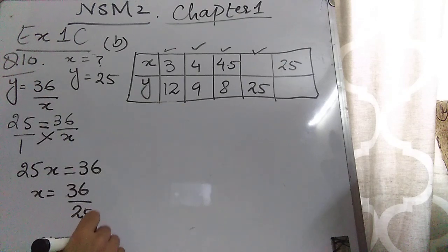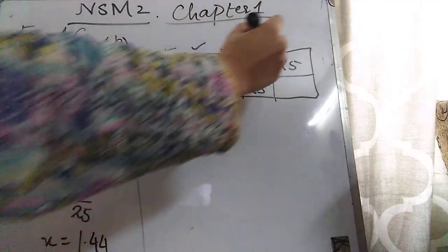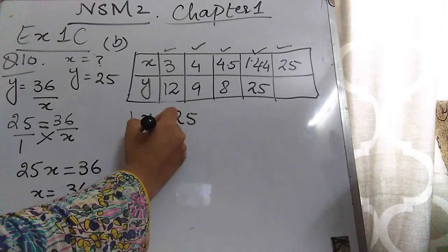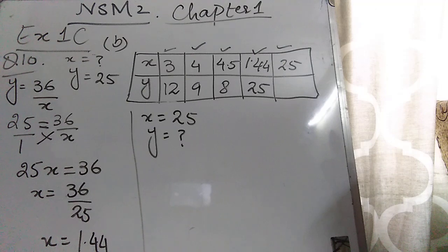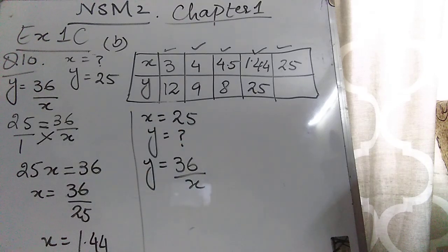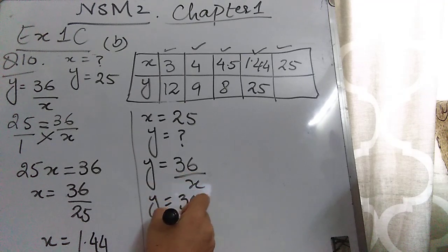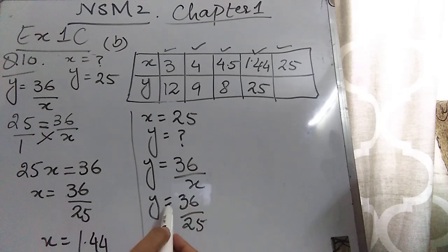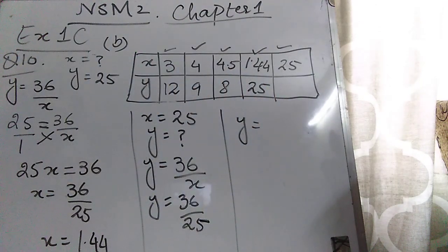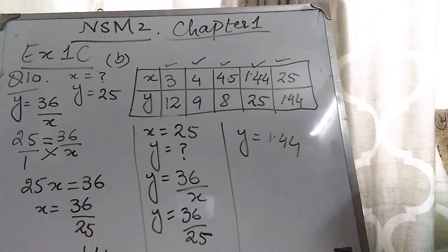In the last column, the value of x is given as 25 and you have to find y. The equation is y = 36/x. Put x = 25: y = 36/25. Dividing gives 1.44. So the value of y is also 1.44. I hope you got the sum — thank you very much.